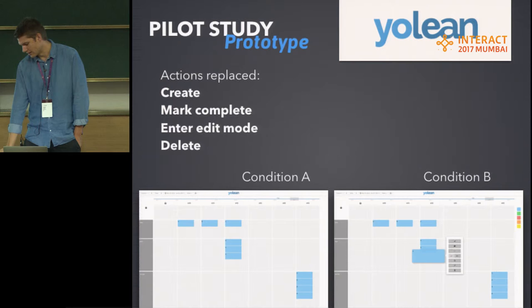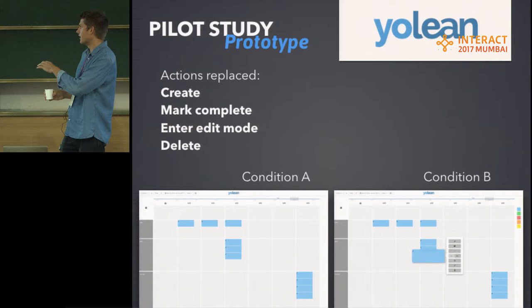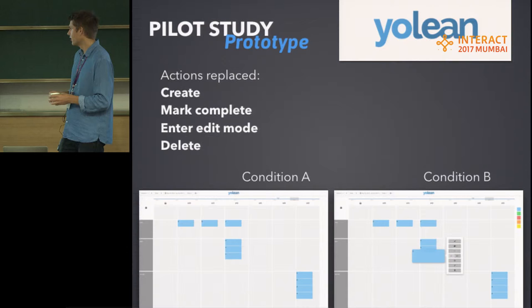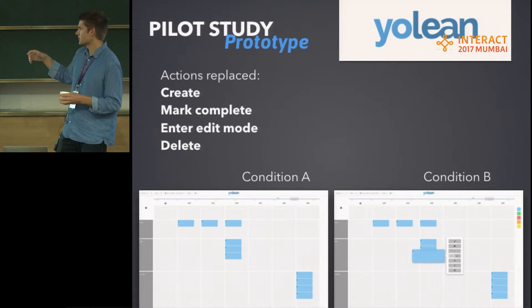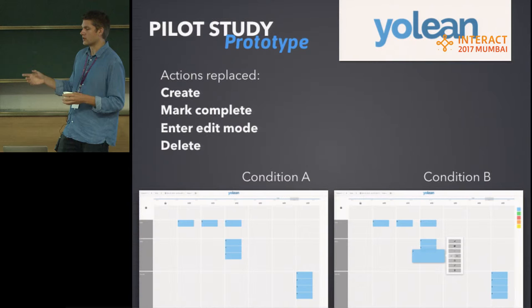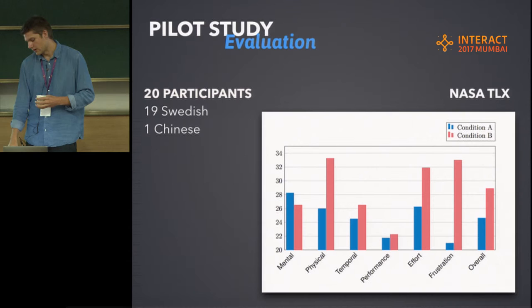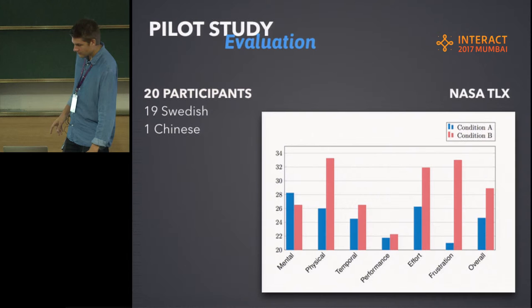We went back to Sweden and did a pilot study to investigate the results. This was done at the company, using their program. We had Condition B — their standard version at the time, where all these actions were done through a manual menu. In Condition A, we replaced those with the gestures we proposed.